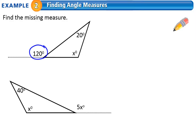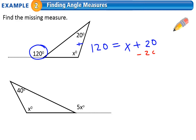An exterior angle is equal to the sum of the opposite two interior angles. So for us, x is equal to 100.